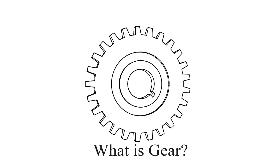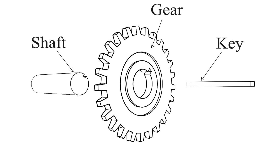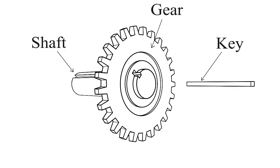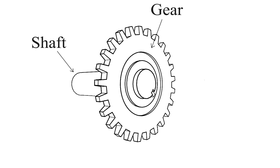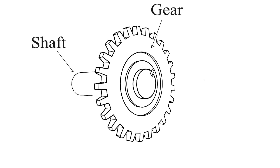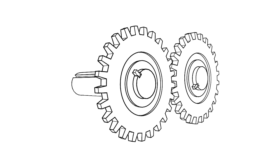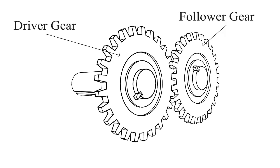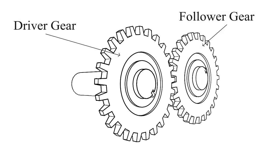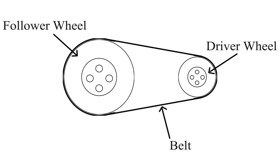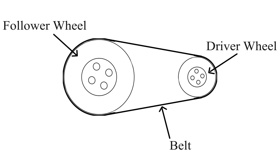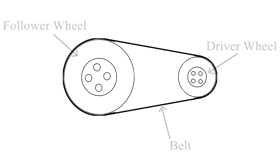What is gear? Two-toothed wheels known as gears are matched together and transfer motion between two shafts, in which one is a driver gear and the other is a follower gear. As we know, slipping of a belt or rope is a common fact in the transmission of motion or power between two shafts. Because of slipping, the velocity ratio is reduced.